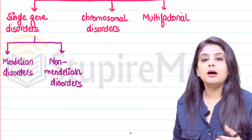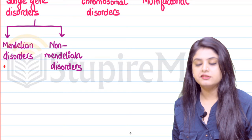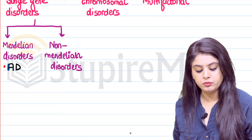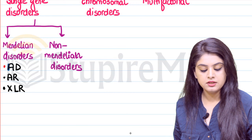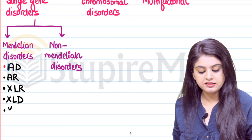Mendelian disorders are the ones that all of us know. These include autosomal dominant, autosomal recessive. Similarly, we have X-linked recessive, X-linked dominant, and lastly Y-linked.